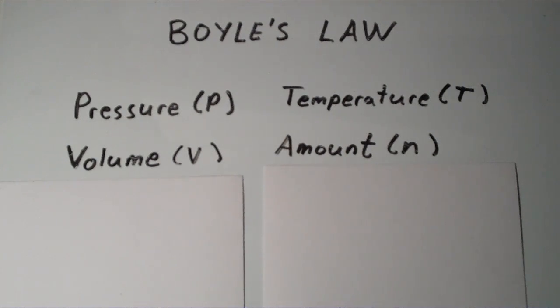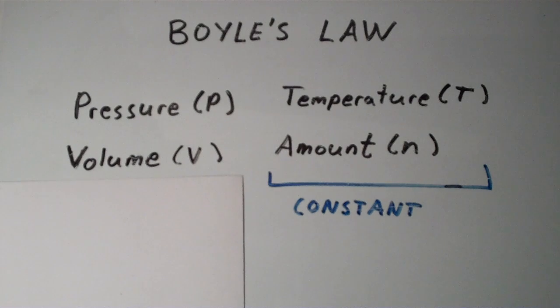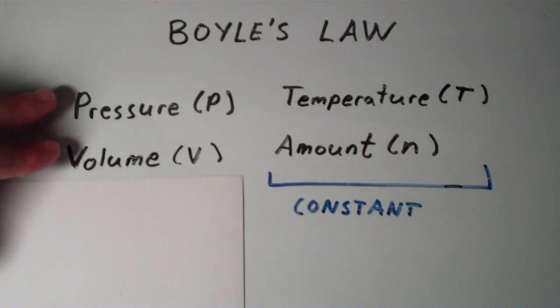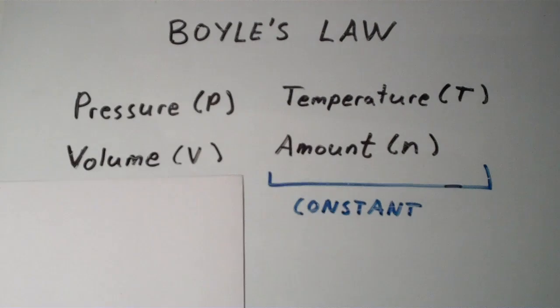So with Boyle's Law, what we're trying to figure out is if I were to hold the temperature of the gas and the amount of the gas constant, if those two things are constant, then how do the pressure and the volume depend on one another? What is the relationship between the pressure and the volume if the temperature and the amount are kept constant?